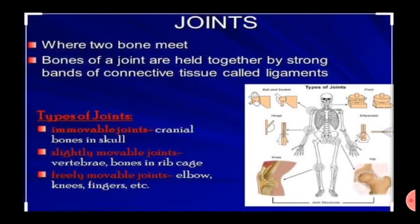Joints are the places where two or more bones are connected to each other. Bones of a joint are held together by strong bands of connective tissue called ligaments.